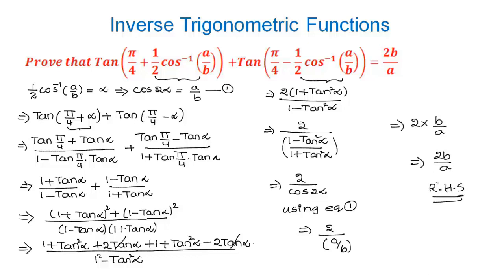Hence we have proved that tan(π/4 + 1/2 cos⁻¹(a/b)) + tan(π/4 − 1/2 cos⁻¹(a/b)) = 2b/a. This is how we use the formulas of compound and multiple angles to solve examples under inverse trigonometric functions.